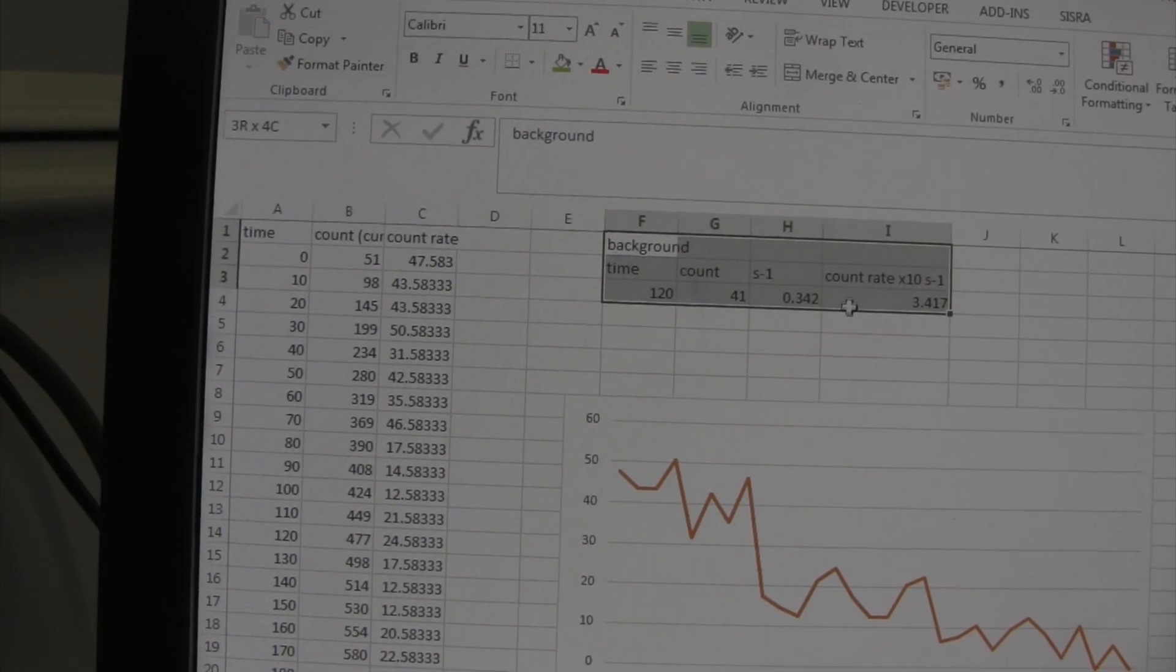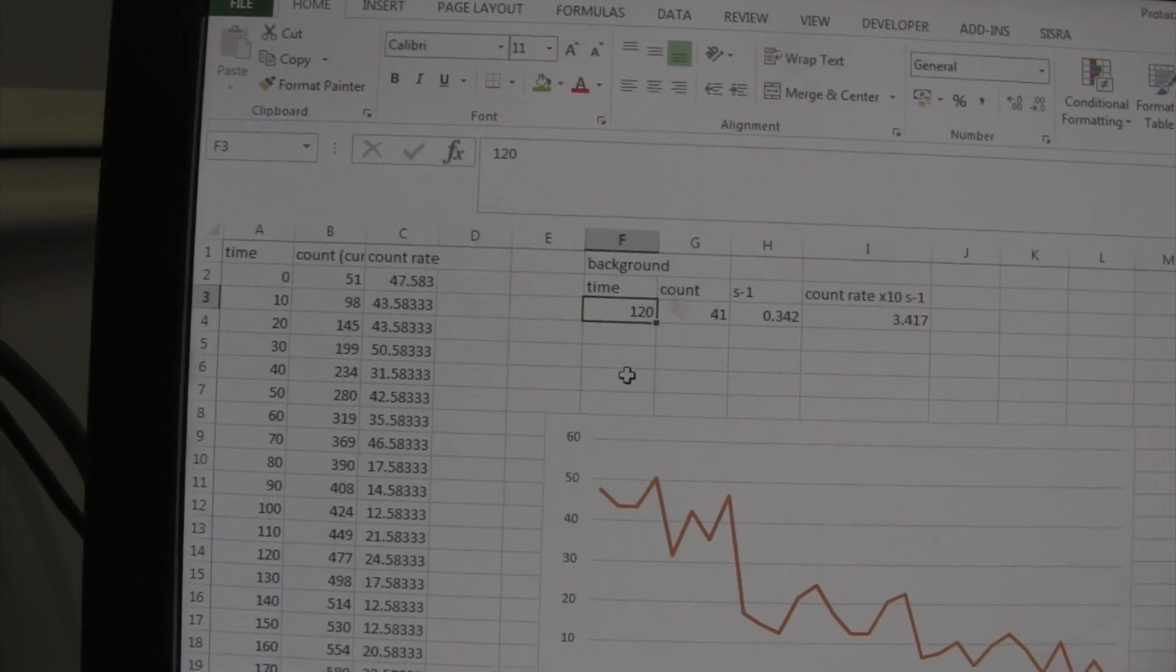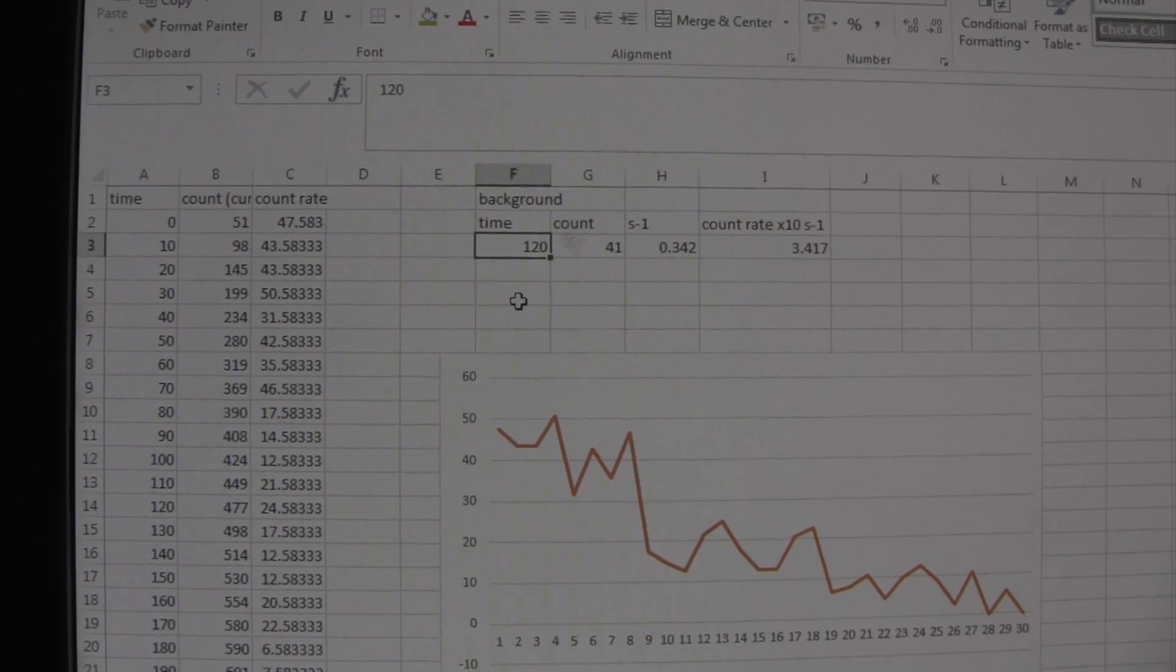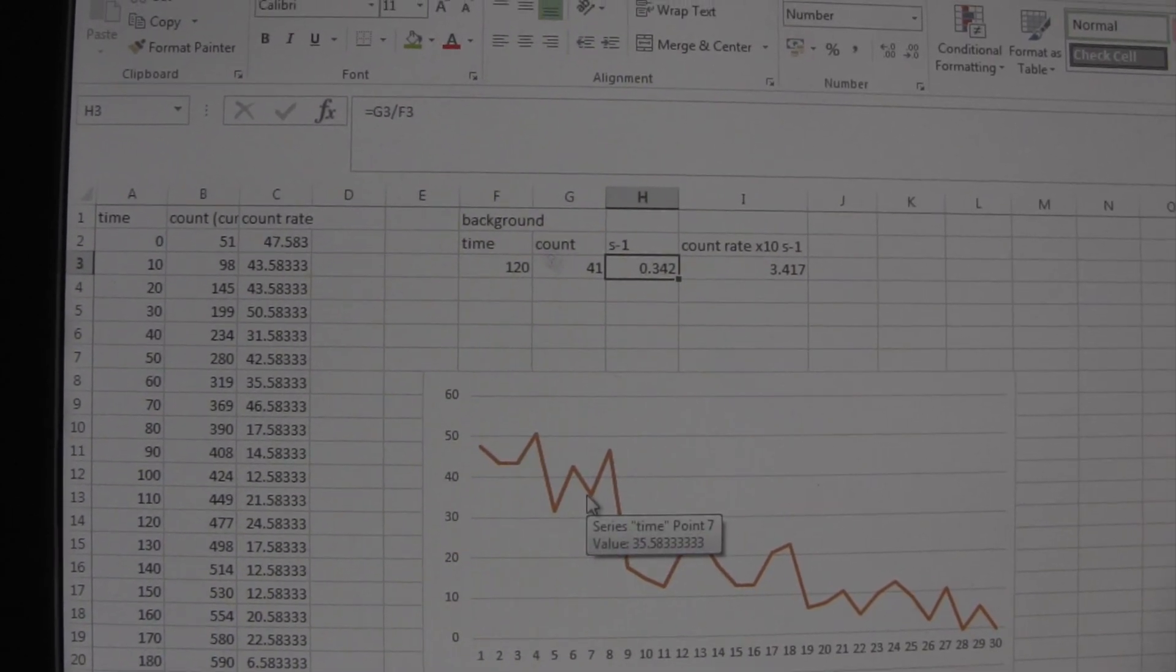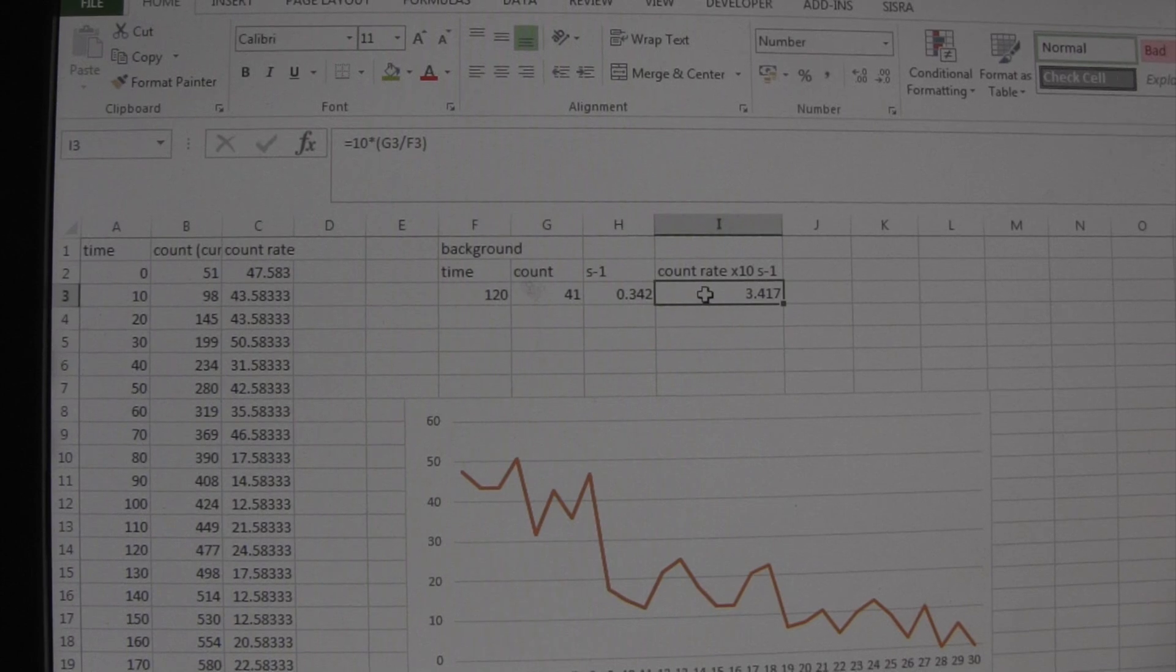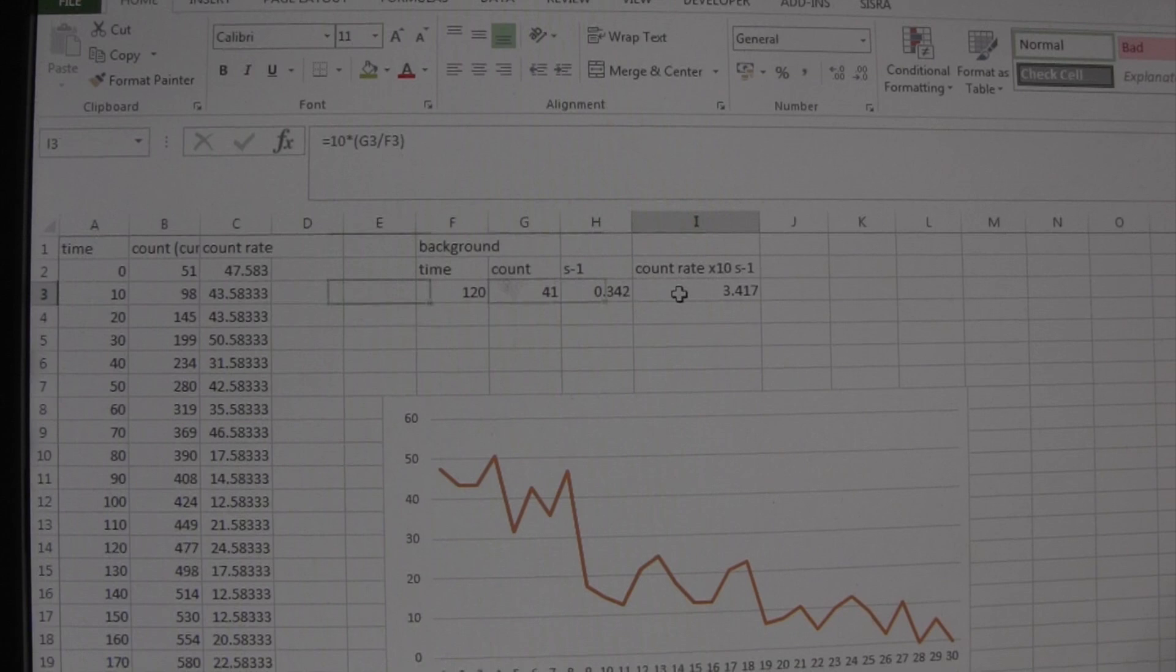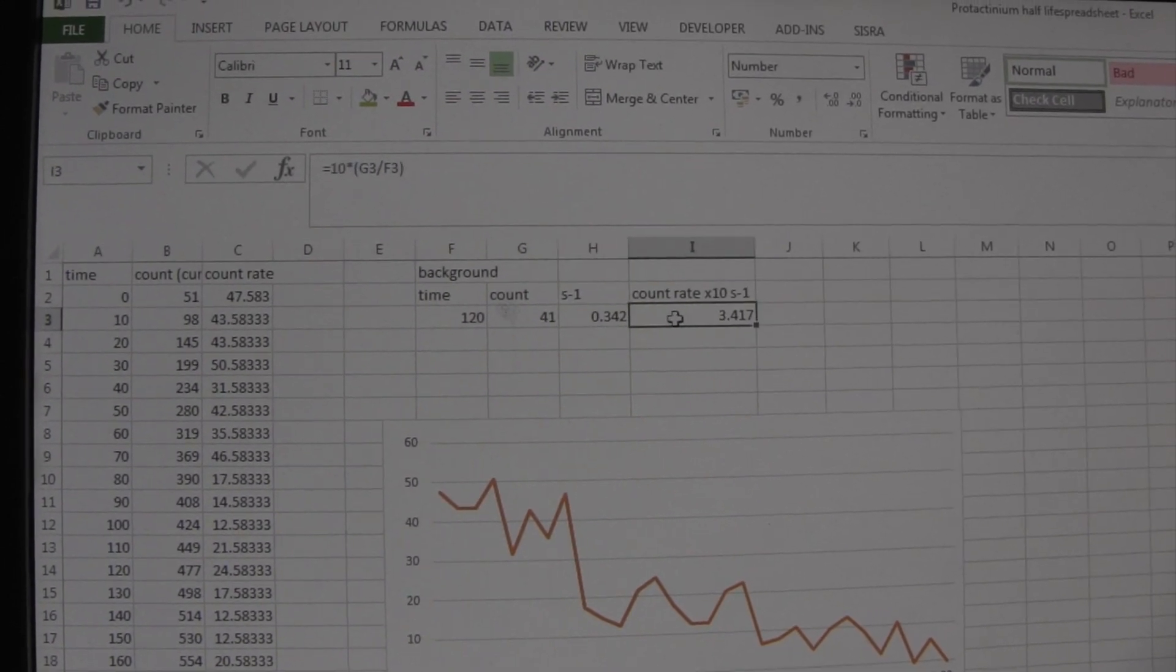On this section here of the spreadsheet, it's where I've worked out what the background count was. So, this was the time that I took the measurement for, 120 seconds. The count rate was 41, and it's 0.342 counts per second. And I've scaled that up to 10 seconds, because I'm using 10 second intervals. So, I've just multiplied this count rate by 10 here.